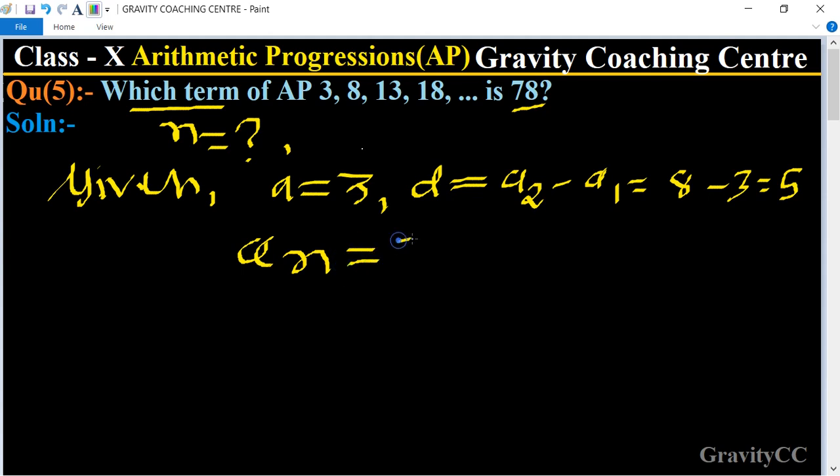And we know that the formula of nth term of an AP is a plus (n minus 1)d equal to 78.